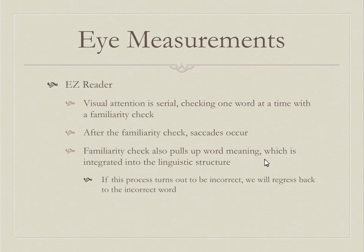With the E-Z Reader model, visual attention is serial — it moves through one word at a time, not in parallel. After the familiarity check, saccades happen, and word meaning is pulled up and integrated into linguistic structure. That integration is where reading models begin — this model covers individual word processing only. If the process turns out incorrect, you regress backwards to the problematic words and reassess.